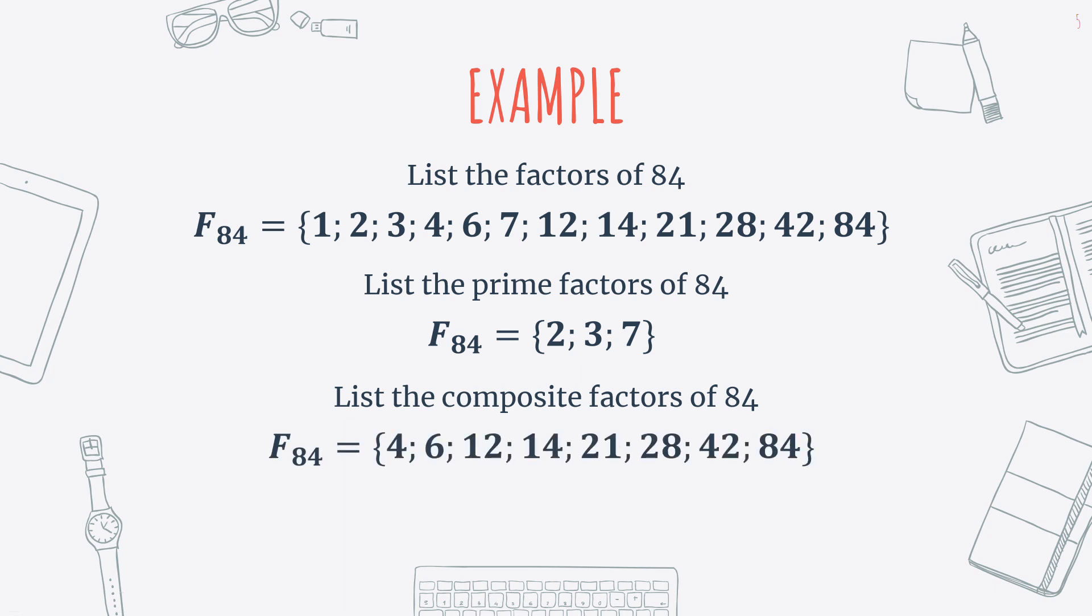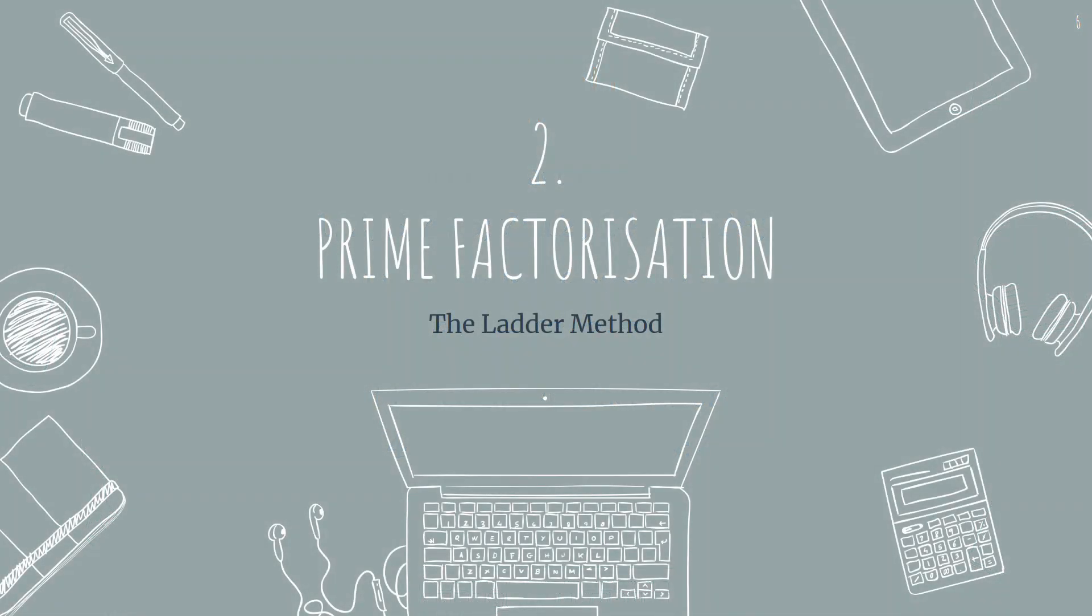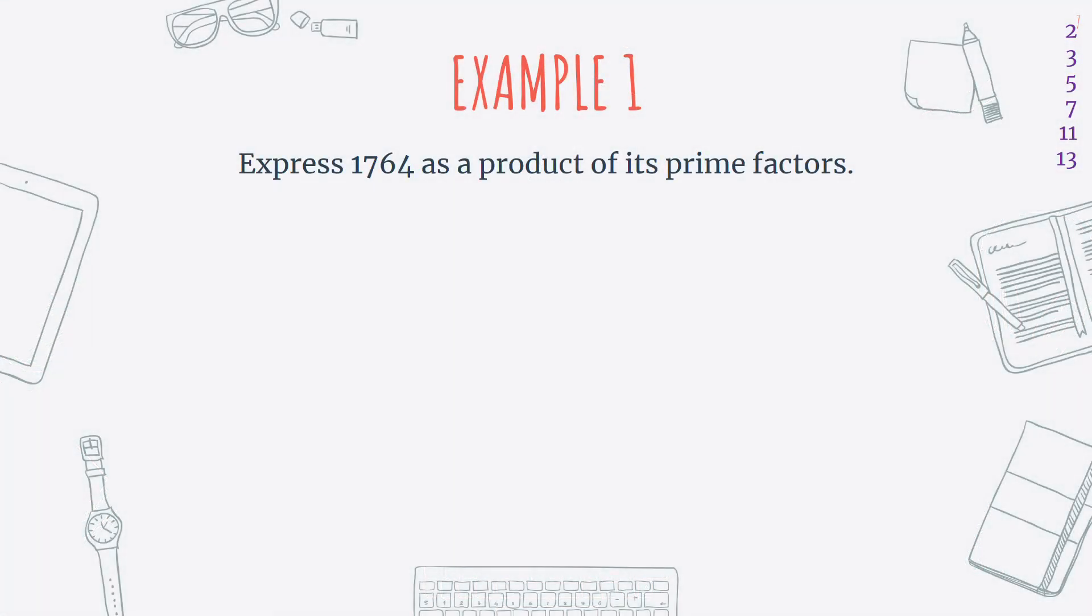Alright, then there's something called prime factorization. We're going to use the ladder method for this. I think it's just the easiest method that there is. It's called the ladder method because it looks like a ladder. So the question will be asked like this. Express 1764 as a product of its prime factors. So what prime numbers, when I multiply them together, give me 1764. So what times what times what times what gives me 1764.